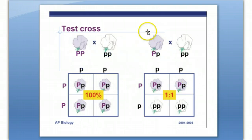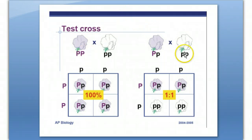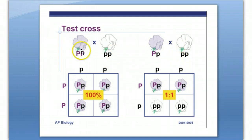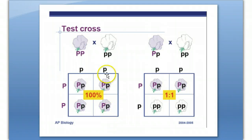The test cross. Let's say we don't know if the purple flowers are big P, big P, or big P, little P. If we cross it with a white flower, little P, little P, there's one of two possibilities. In the first possibility, if the purple flower plant is big P, big P, and you cross with little P, little P, 100% of the offspring will be purple, big P, little P.